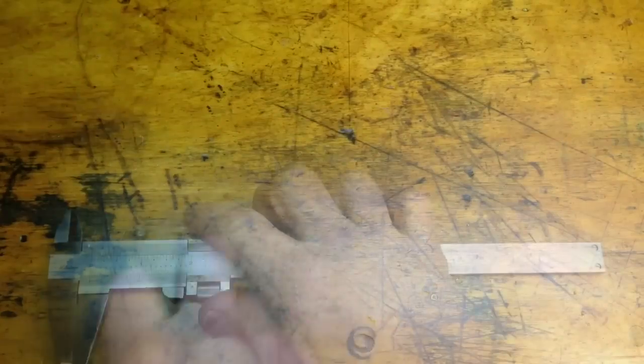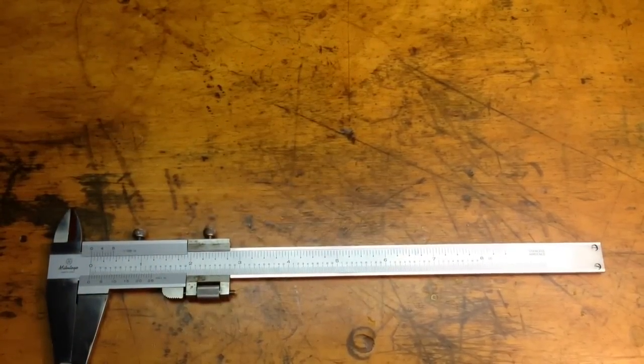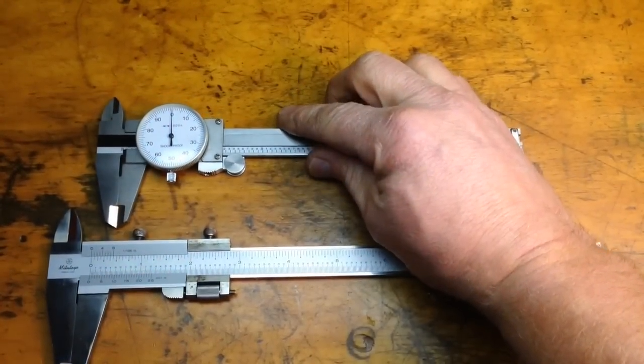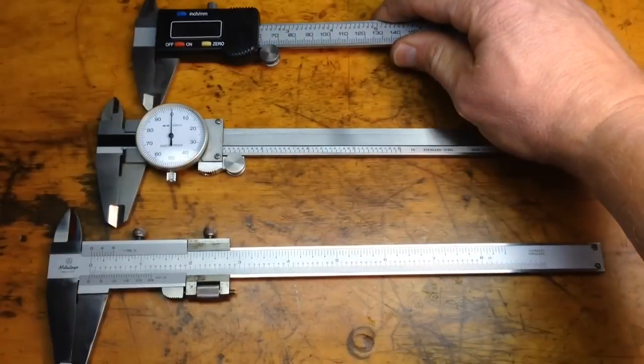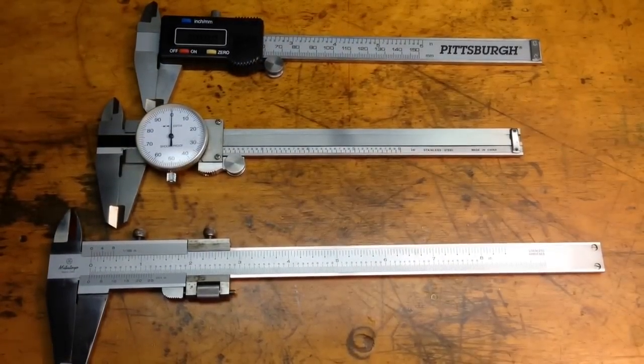Now you can see the difference between the vernier, the dial caliper, and the digital caliper. This is HowToBob. Thanks for watching.